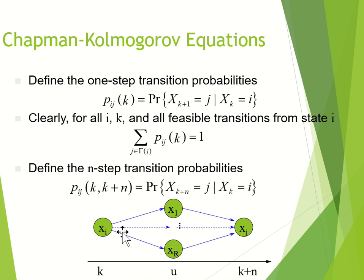This looks like you are starting at state i at time k. Then you go at some intermediate time u to a state, and then at time k plus n, which is higher than the intermediate and higher than k, you end up at state j.